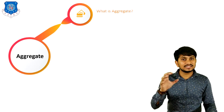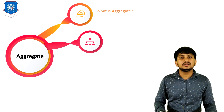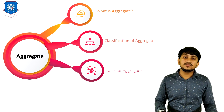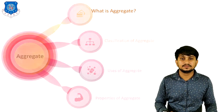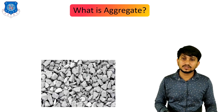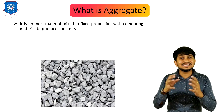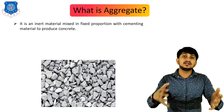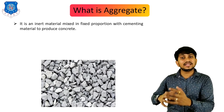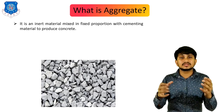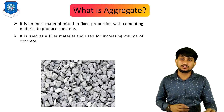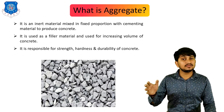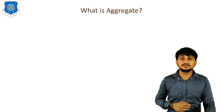Now let's discuss the second material in today's lecture: aggregate. We will cover what is aggregate, classification of aggregates, various uses, and various properties. Aggregate is an inert material — it cannot react with any other materials. It is mixed in fixed proportions with a cementing material to produce concrete. It is used as a filler material to increase the volume of concrete and is responsible for the strength, hardness, and durability of concrete.